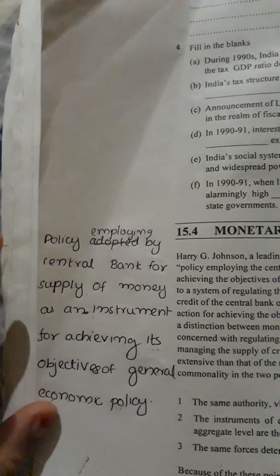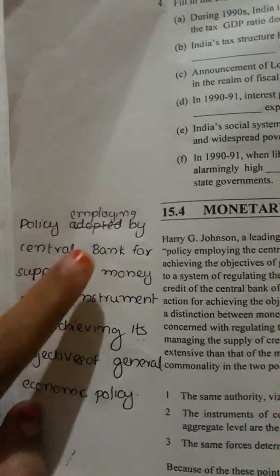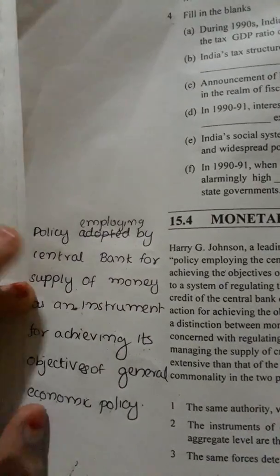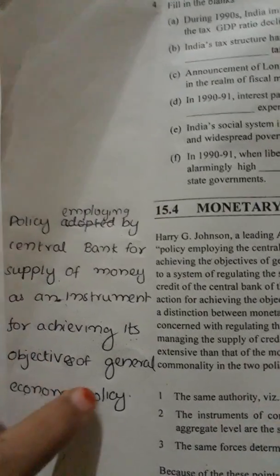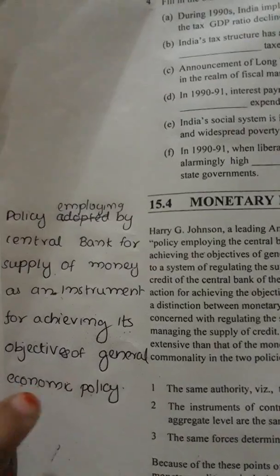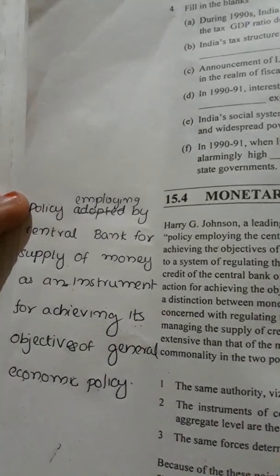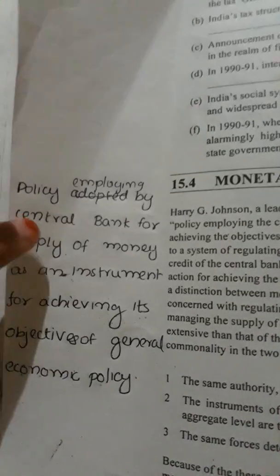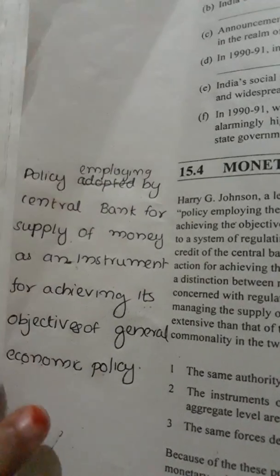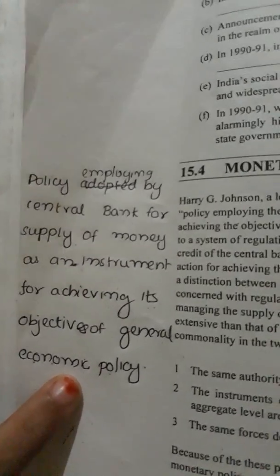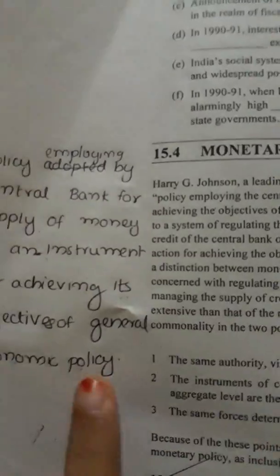The central bank uses certain methods to achieve the objective of the general economic policy — that is, the terms and conditions to satisfy a particular policy. Whatever the central bank adopts for the supply of money, it does so to achieve its economic policy objectives. So: policy employing the central bank for the supply of money as an instrument to achieve its general economic policy terms and conditions.